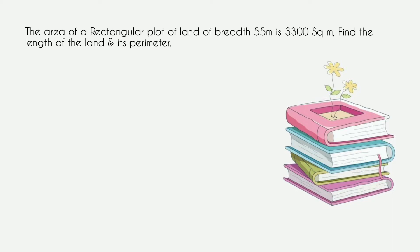The next question says: the area of a rectangular plot of land with breadth 55 meters is 3300 square meters; find the length of the land and its perimeter. The breadth is given as 55 meters and the area is 3300 square meters. From these we have to find the length and the perimeter.